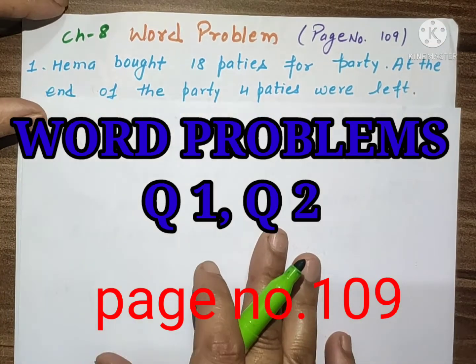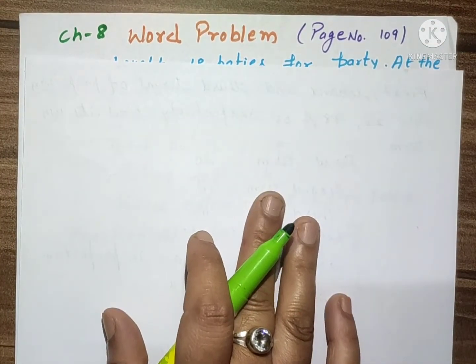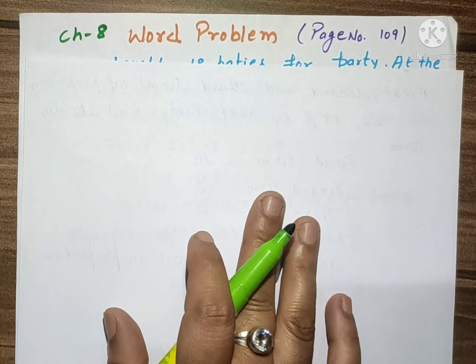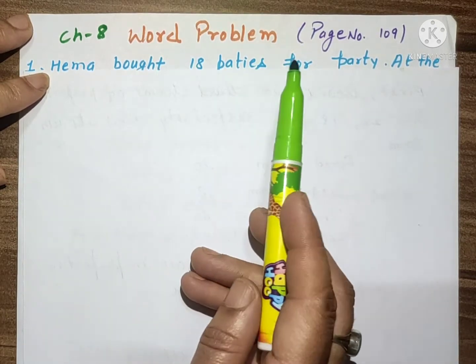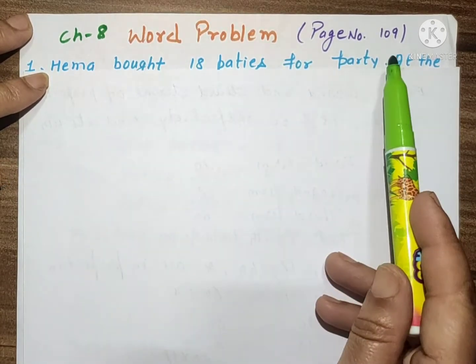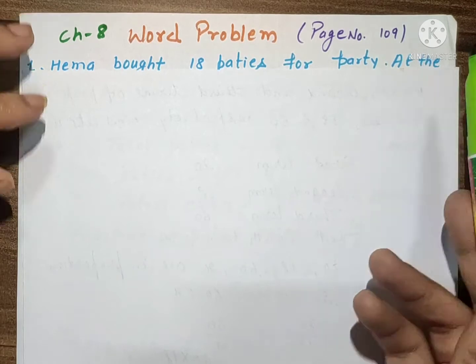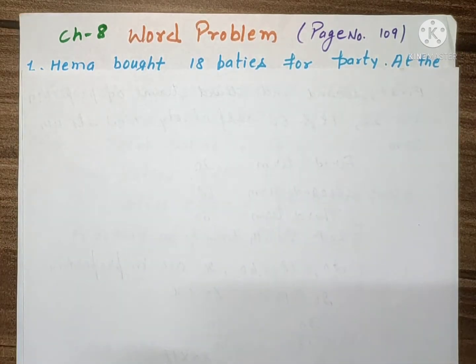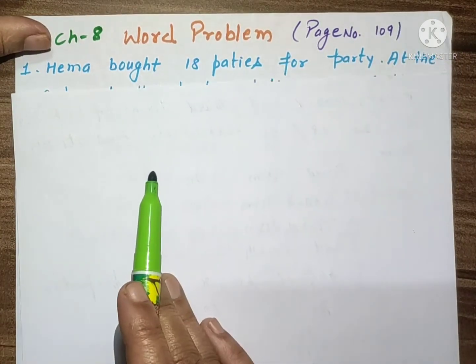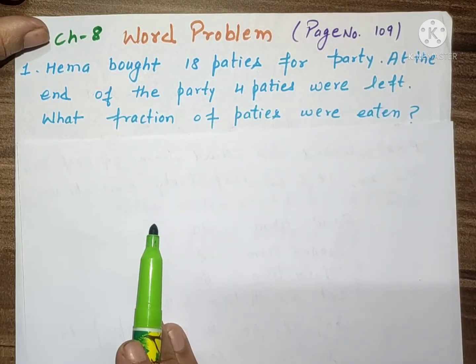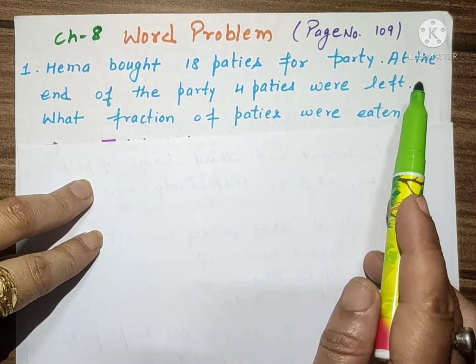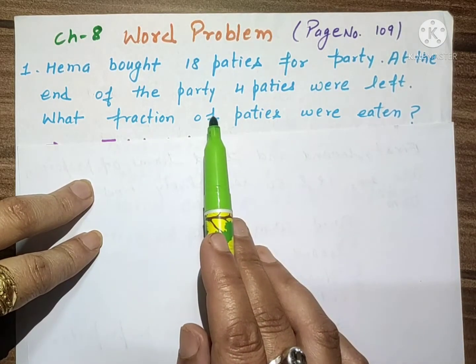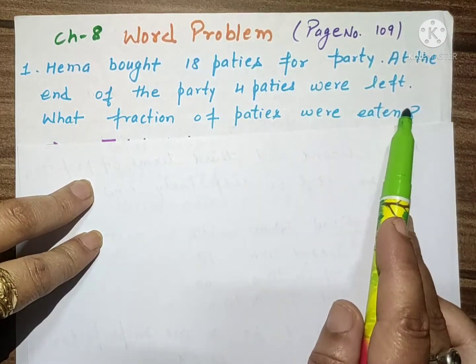Hello, good morning students. How are you? I hope you are doing well. Dear students, today we will solve word problems of Chapter 8, page number 109 given in your book. So take the first question. First question is: Hema bought 18 patties for the party. At the end of the party, four patties were left.